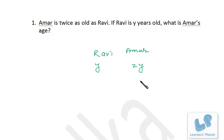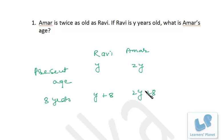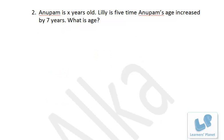Now suppose you are asked: what will their ages be after eight years? After eight years, we add 8 to these ages, so Ravi's age becomes y plus 8 and Amar's becomes 2y plus 8. Before two years, it would have been y minus 2 and 2y minus 2 respectively. Isn't it very simple friends?